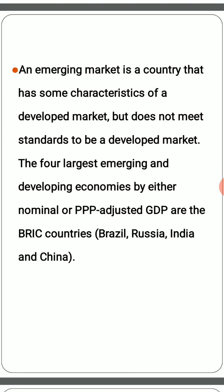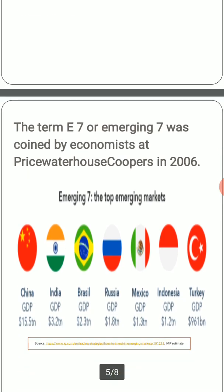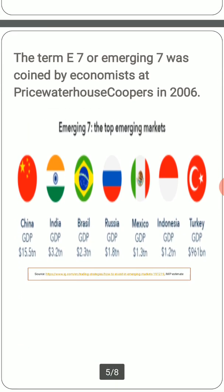We have another concept called E7, or Emerging 7. The term was coined by economists at PwC in 2006. In this slide we can see there are seven countries arranged in terms of their GDP size. The first country is China with a GDP of 15.5 trillion dollars, whereas India is second with 3.2 trillion dollars.